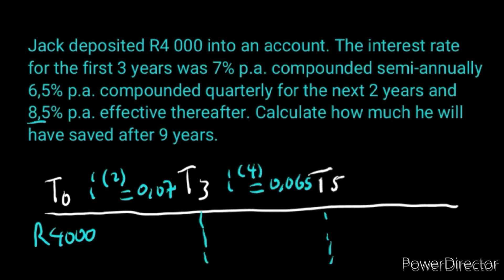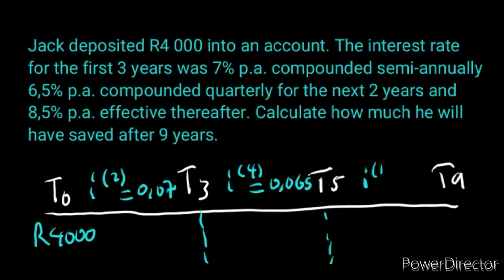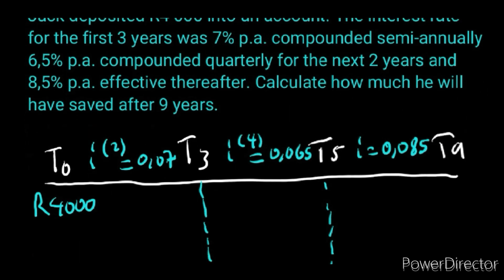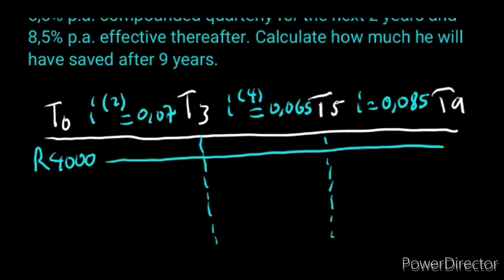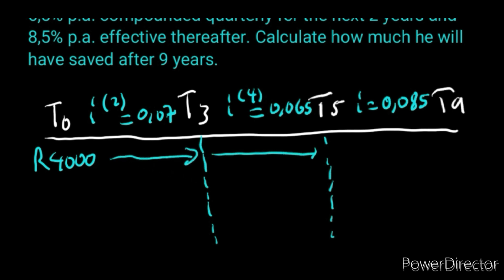Now they said 8.5% per annum effective thereafter — meaning from T5 onwards the rate is 8.5% per year. They said calculate how much he will have saved after 9 years, so the total is 9 years. Because it's just per annum, we write i (or i1), and 8.5 divided by 100 gives 0.085. Now we draw a solid line all the way to the end. Whenever there are dotted lines, we pause and continue — pause and continue — until the end.